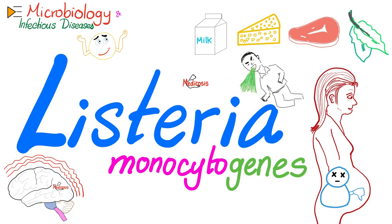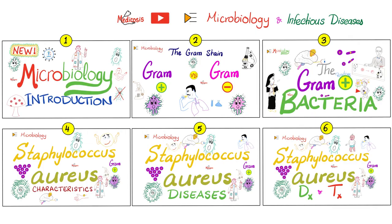Listeria is acquired after consuming raw, unpasteurized milk, soft cheese, meat, and vegetables, if they are raw and unwashed — especially cabbage and lettuce. In the words of Gordon Ramsay, it's raw.